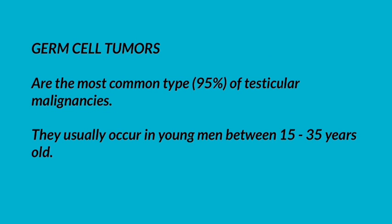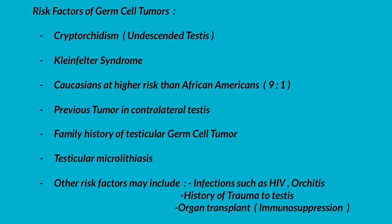Germ cell tumors are the most common type of testicular malignancies, comprising 95 percent. They usually occur in young men between 15 to 35 years old. Risk factors include cryptorchidism or undescended testis, Klinefelter syndrome, Caucasians at higher risk than African Americans at a ratio of 9 to 1, previous tumor in the contralateral testis, family history of testicular germ cell tumor, and testicular microlithiasis.